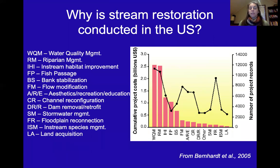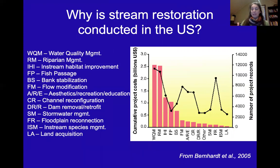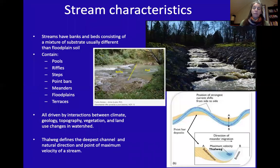Stream restoration in the U.S. is a multi-billion dollar industry. Looking at the number of projects from most to least common: water quality, riparian management, in-stream habitat improvement, fish passage, bank stabilization, flow modifications, aesthetics, dam removal, and stormwater management — there are many reasons why we undertake stream restoration efforts.